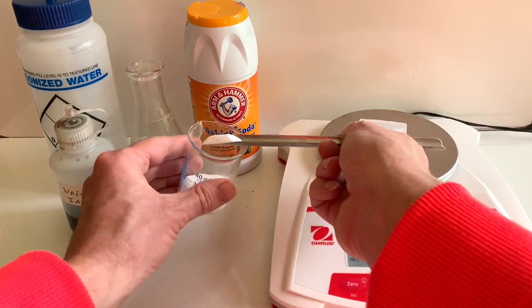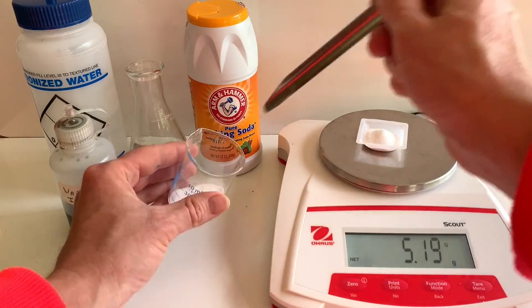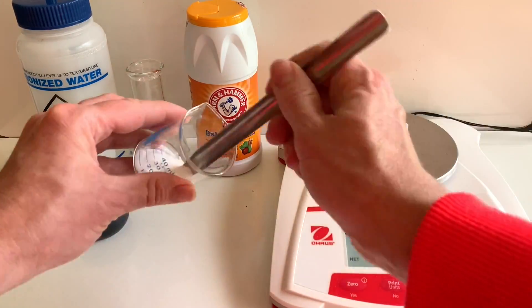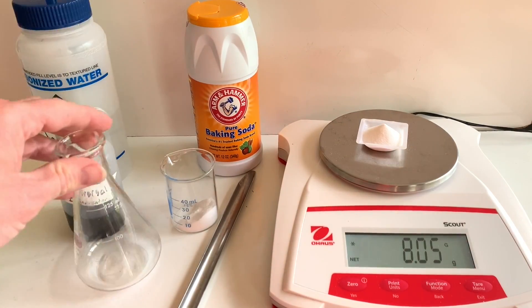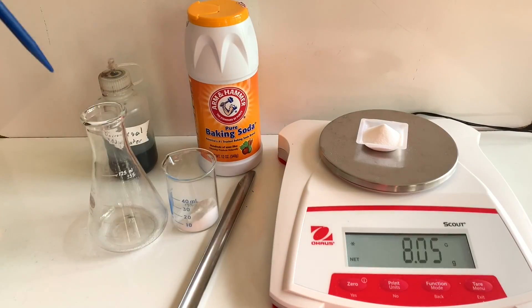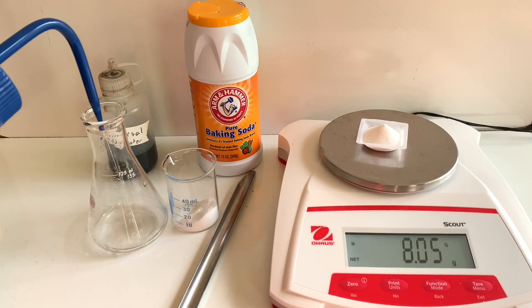So here's the experiment. 8.05 grams was measured out of the sodium bicarbonate, which is baking soda. Then water was placed in the Erlenmeyer flask, distilled water, to dissolve the sodium bicarbonate.